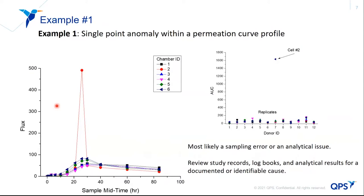The first example is a single data point that stands out from the crowd — very clearly an outlier from the other replicates. This is most likely either a sampling error or an analytical issue. By reviewing the study records, audit trails, and log books, you may be able to identify what caused this one sample to be anomalous. If not, the question remains: what do you do with it?